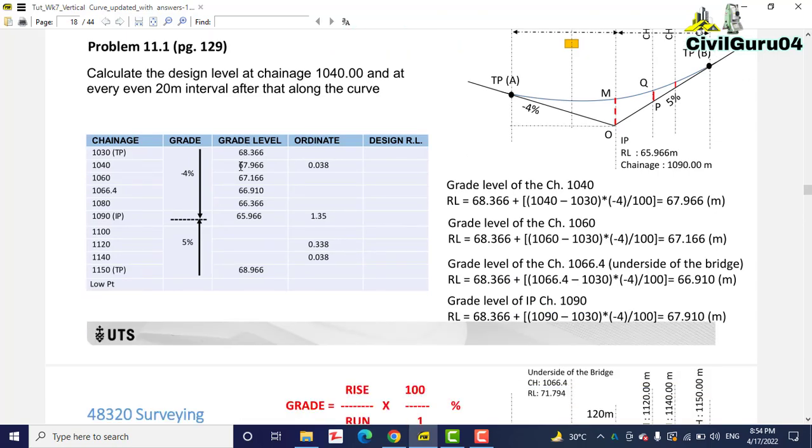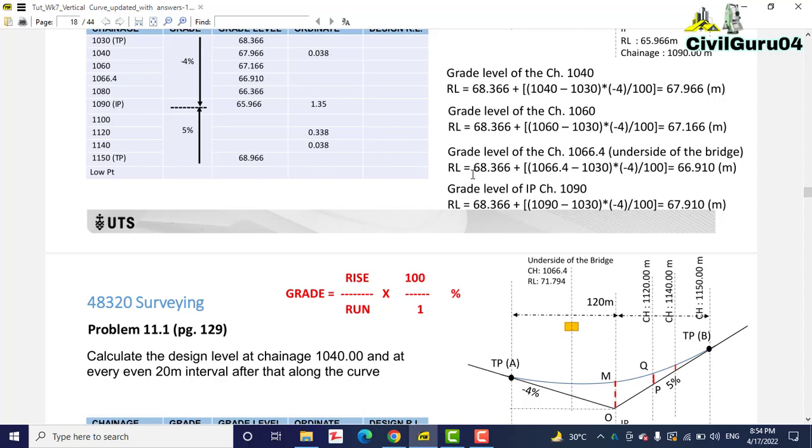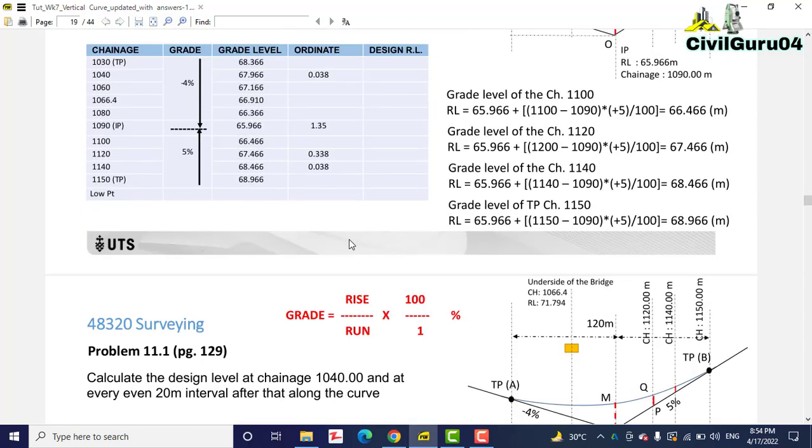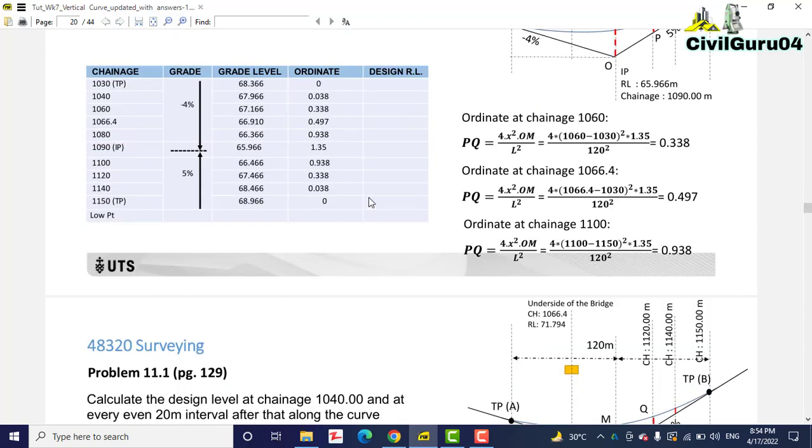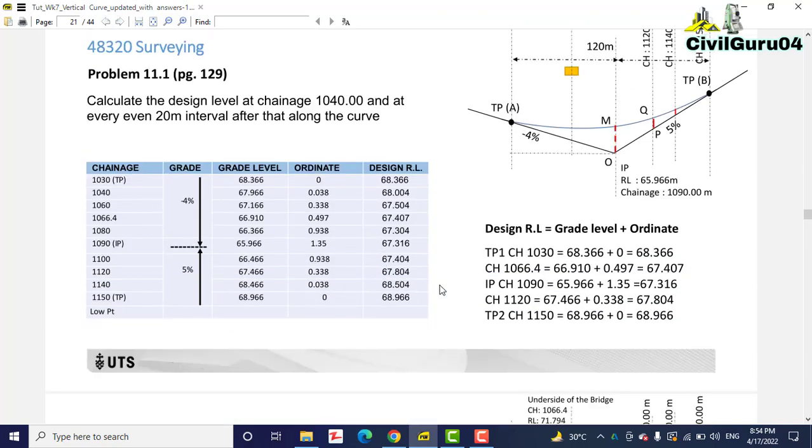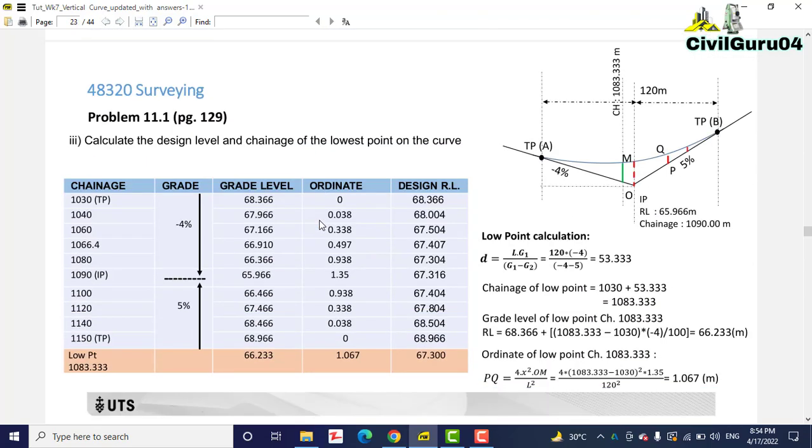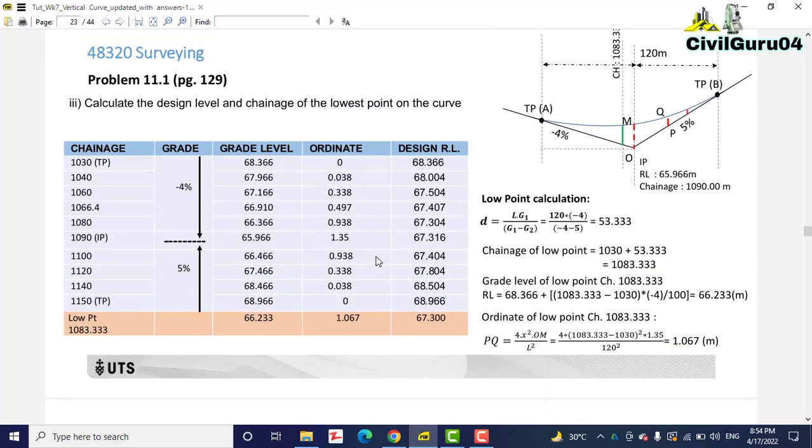When we have grade levels and ordinates, then we can calculate our design RL for the curve. Here we have all formulas and we are going step by step to calculate our design RL for this curve using grade levels and ordinates of this vertical curve. At the end we need to measure lowest point of the curve using this formula.